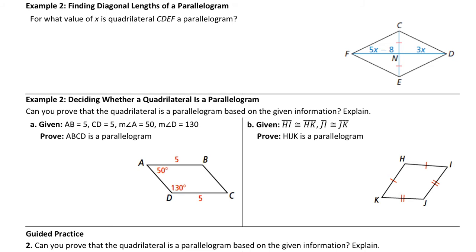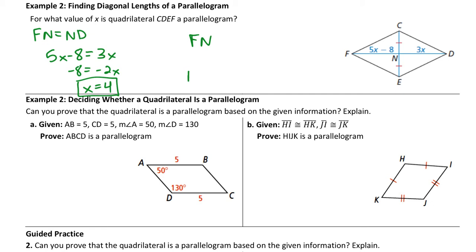Example 2 practices the diagonal bisection property. If the diagonals bisect each other, then FN must equal ND in length. The equation is 5X − 8 = 3X. Subtracting 5X from both sides gives −8 = −2X, so X equals positive 4. To verify: substituting 4 into FN gives 5(4) − 8 = 12, and substituting into ND gives 3(4) = 12. The outputs match, confirming X = 4 is correct.